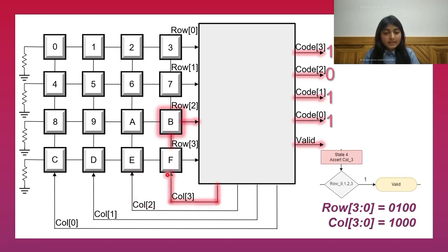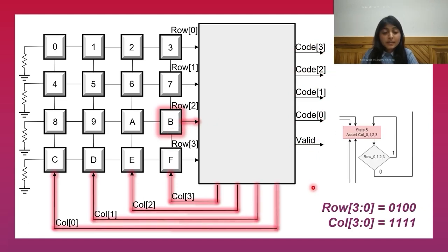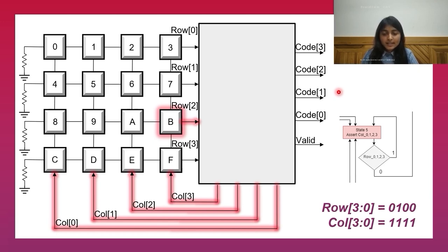When column 3 is asserted, the row 2 line also becomes high due to the closed switch action of button B. This asserts the valid signal for one clock cycle, meaning the encoded output is now present at the code line. We can see that the output 1011 corresponds to the pressed button B. If button B remains pressed, all the column lines are asserted and the valid line and code lines are de-asserted, indicating that a valid output is not present. This addresses the design requirement that if a button is pressed and held down, it must not be interpreted as pressed repeatedly.